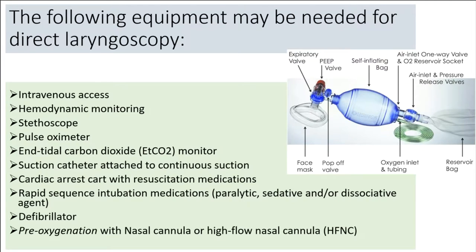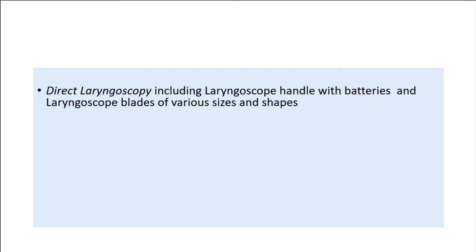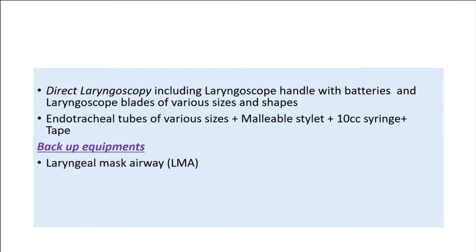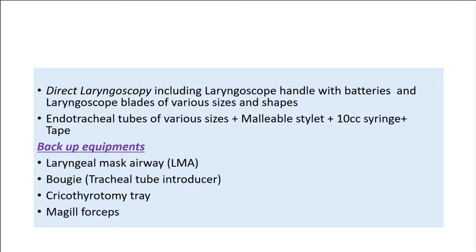Additional equipment includes: defibrillator, pre-oxygenation with nasal cannula or high-flow nasal cannula (HFNC), bag valve mask with masks of various sizes, direct laryngoscopy including laryngoscope handle with batteries and blades of various sizes and shapes, endotracheal tubes of various sizes, malleable stylet, 10cc syringe, and tape. Backup equipment includes laryngeal mask airway (LMA), bougie tracheal tube introducer, cricothyroidotomy tray, and Magill forceps.